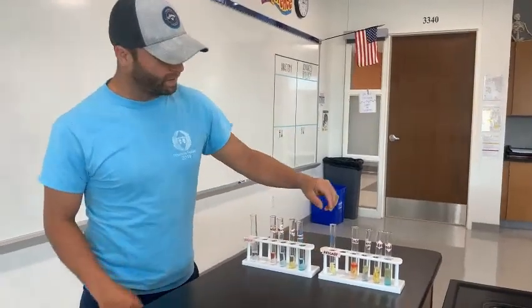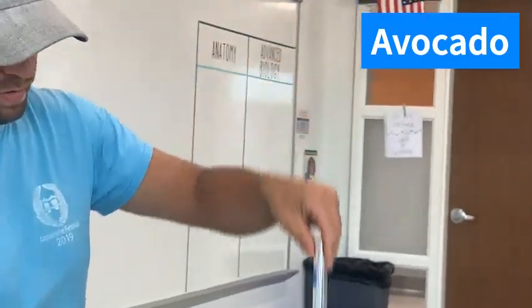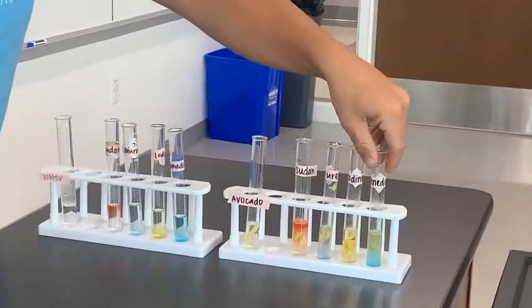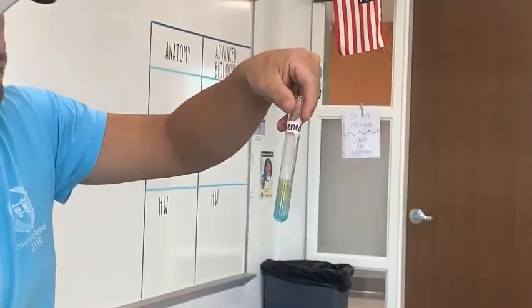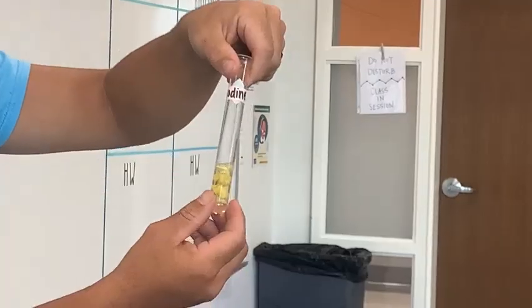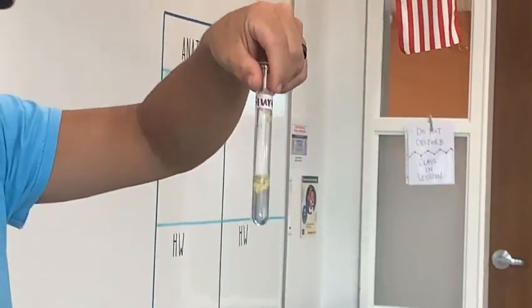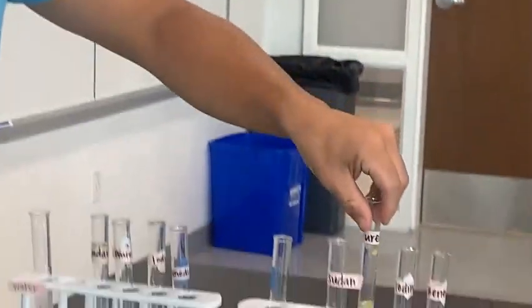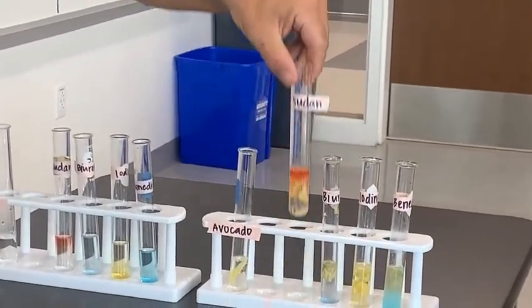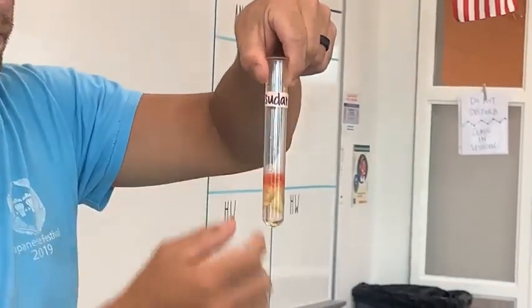Next on my sandwich was avocado — cut up and put in a little bit of water. With Benedict's solution, you can still see the blue color. With iodine, still a yellowish color — no change. With the Biuret test, still a bluish color. And then with the Sudan test, there is a pretty dark colored red ring, indicating the presence of lipids.